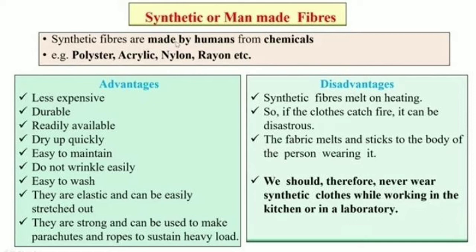Synthetic or man-made fibers are made by humans from chemicals. For example, polyester, acrylic, nylon, rayon, etc. The advantages of synthetic fibers are: they are less expensive, durable, and readily available. They dry up quickly, are easy to maintain, do not wrinkle easily, and are easy to wash. They are elastic and can be easily stretched out. They are strong and can be used to make parachutes and ropes to sustain heavy loads.